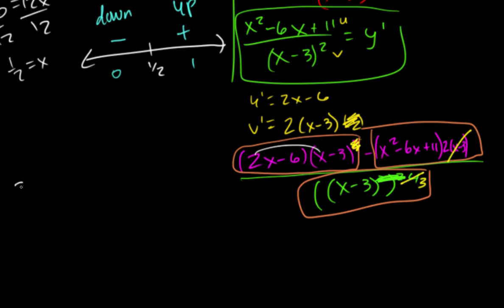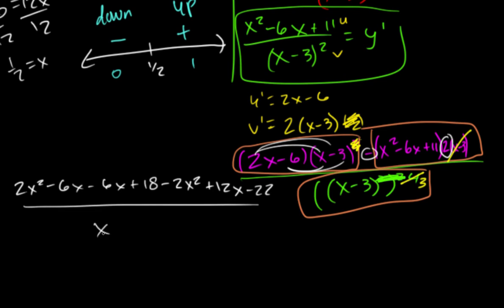So we're going to get 2x squared minus 6x minus 6x plus 18. I'm going to take this 2 and this negative, so I'll distribute a negative 2 to all of this. So negative 2x squared plus 12x minus 22. Then I have x minus 3 cubed on the bottom.